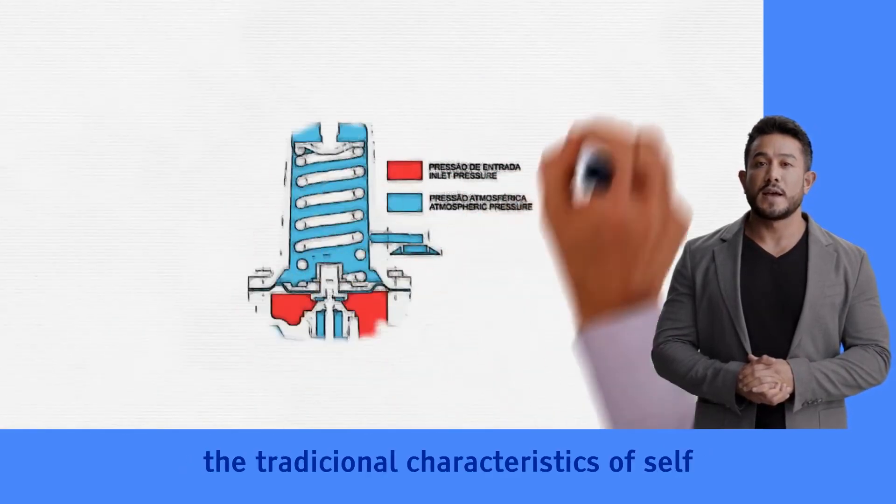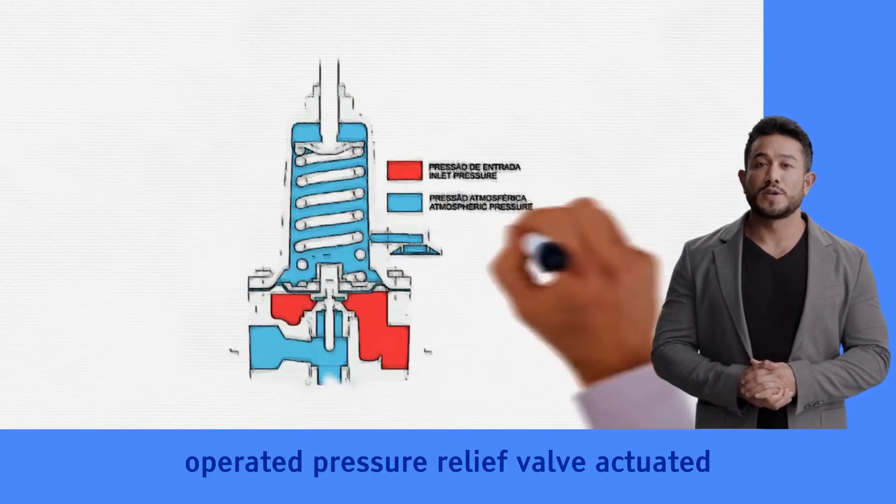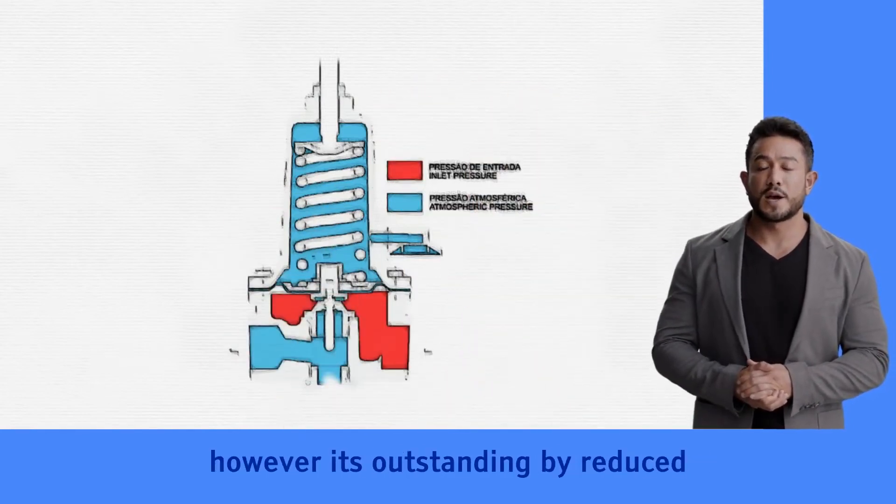The Pressure Relief Series JR keeps the traditional characteristics of self-operated pressure relief valve actuated by the seat of spring and diaphragm.